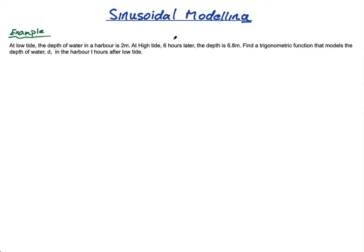We're going to look at tides specifically. In this example, at low tide the depth of water is 2 meters. At high tide, 6 hours later, the depth is 6.8 meters. We need to find a trigonometric function that models the depth of water d in the harbor t hours after low tide. Let's break that down and try to make a graph.